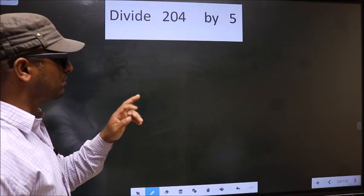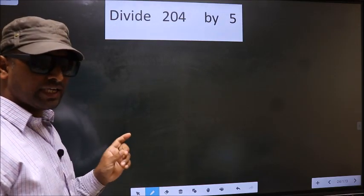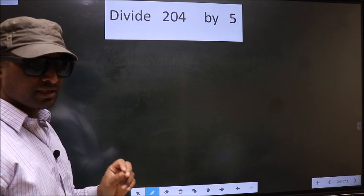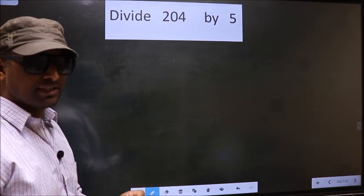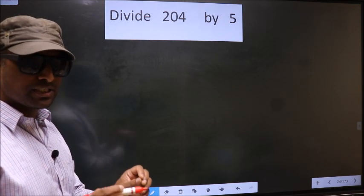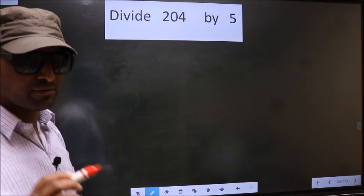Divide 204 by 5. While doing this division, many do this mistake. What is the mistake that they do? I will let you know. But before that, we should frame it in this way.